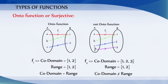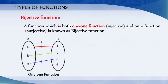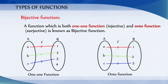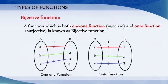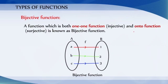A function which is both 1-to-1, that is injective, and onto, that is surjective, is known as a bijective function.